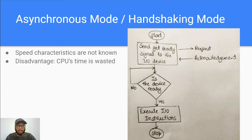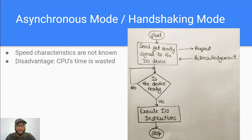Let us go to the asynchronous mode of data transfer, where data is transferred after checking the status of the IO device. Asynchronous mode is suitable when speed characteristics are not known. We start, send the get ready signal by sending the address and chip select signal to the IO device — essentially a request signal. After that, we check if the device is ready, looping until it is. When the answer is yes, we come out of the loop, execute the IO instruction, and stop.